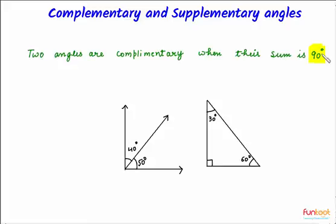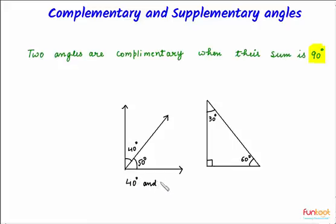Let's take some examples. Here we can see that this angle is 40 degrees and this angle is 50 degrees, and if we add the two, the sum will be 90 degrees. Because the sum of these two angles is 90 degrees, that is why these two angles — 40 degrees and 50 degrees — are complementary.